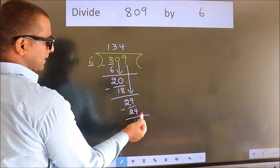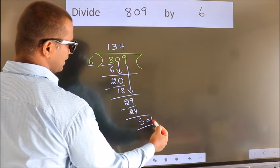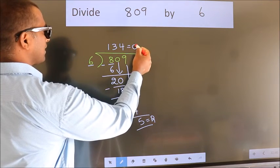No more numbers to bring it down. So we stop here. This is our remainder. This is our quotient.